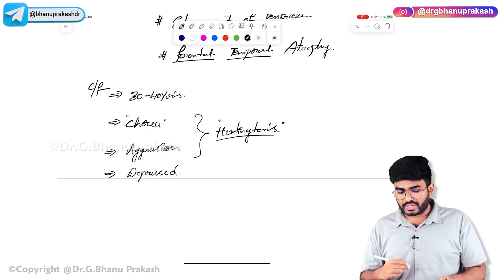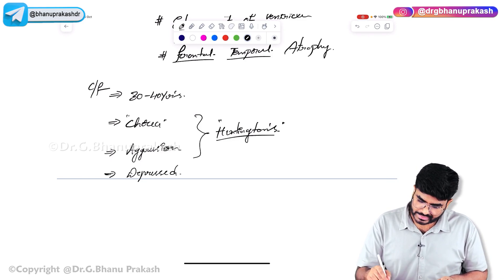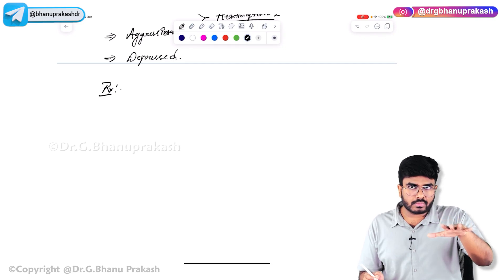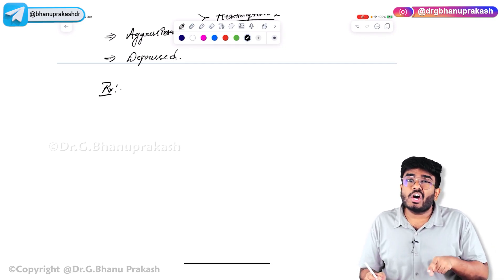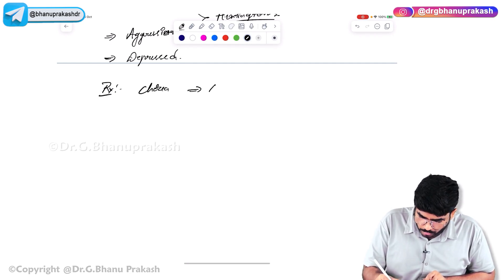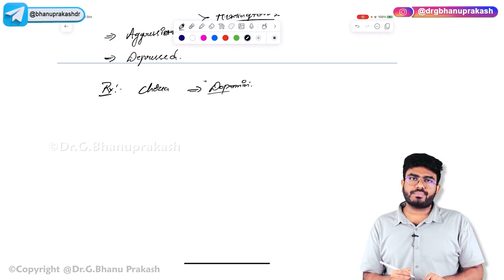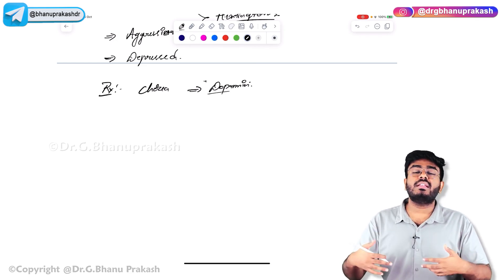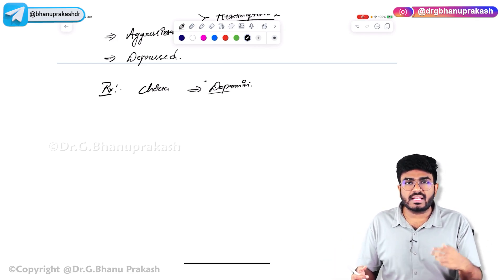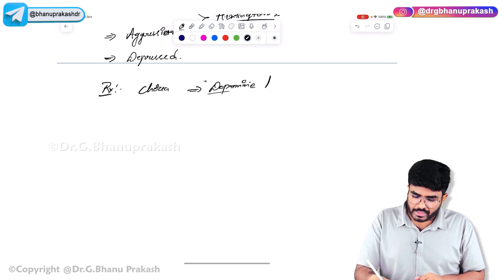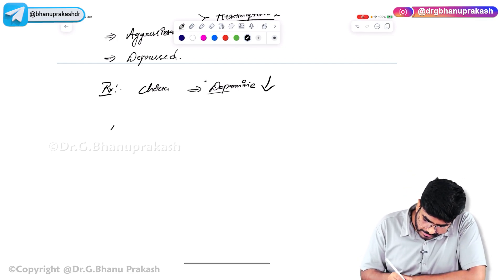How to treat Huntington's disease? Although GABA is going down, the chorea is mainly driven by dopamine — dopamine is stimulatory for movements. So to treat chorea, you need to decrease or inhibit dopamine.